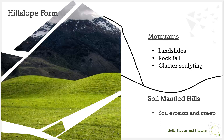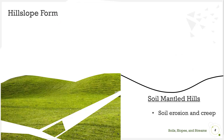Diversity of form means diversity of process. The shape of a mountain or hill controls what processes are active, and the processes also control the form. What kind of erosion processes happen on these slopes? In the mountains, we likely have landsliding on the steep gradients, rockfall on cliffs, and glacial sculpting at the highest elevations. While in the soil-mantled hills, we have processes that actively erode the soil and produce the soil at the same time. A different lecture will talk about landslide processes on slopes, so let's focus on the erosional processes that closely relate to the soils such as we have here.